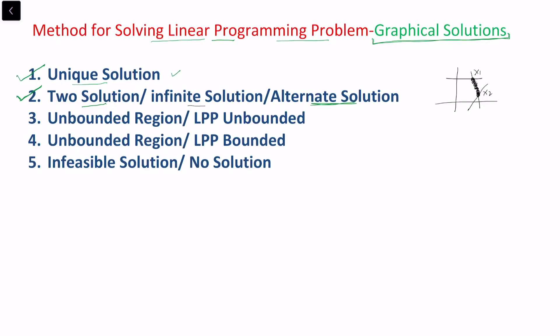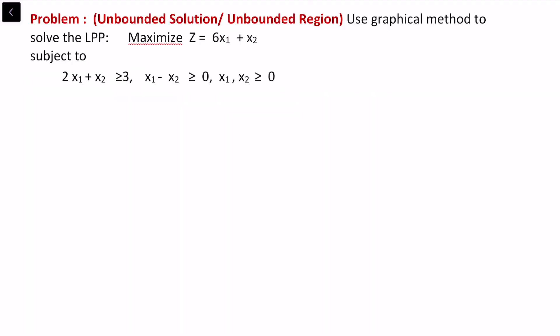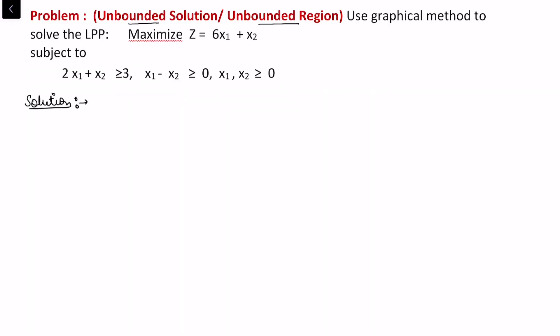Now in this current video I will be considering the three remaining cases: unbounded region LPP unbounded (Case 3), unbounded region LPP bounded (Case 4), and infeasible solution or no solution (Case 5). Let us take them one by one in the form of examples and understand what these situations mean.